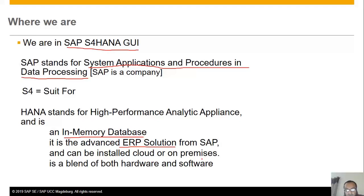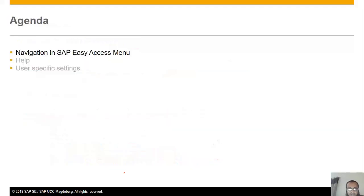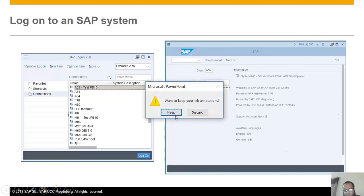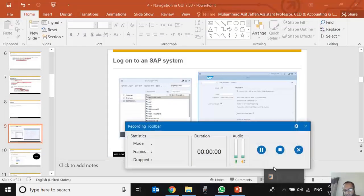SAP S4HANA is an advanced version of ERP solution delivered by SAP for decades. It can be installed on cloud or on premises. For example, IBA or GLAMFARU Group may have their own servers with S4HANA installed, or SAP can host it as a public or private cloud service providing user IDs and passwords to corporate clients. Unlike earlier SAP versions which were software-only, S4HANA has specialized hardware requirements due to its in-memory database nature. We'll continue exploring SAP S4HANA navigation features in the next video.